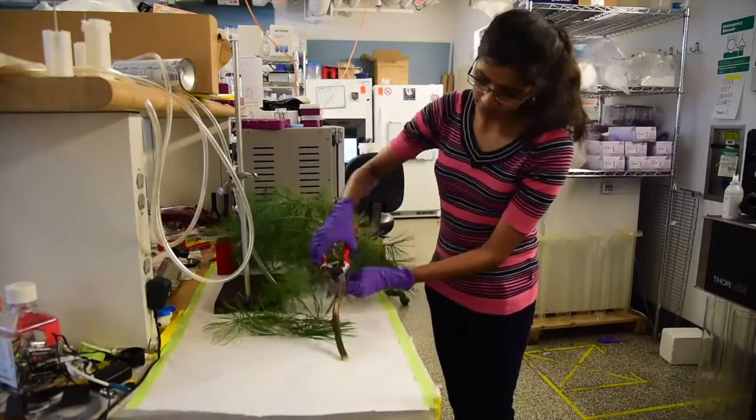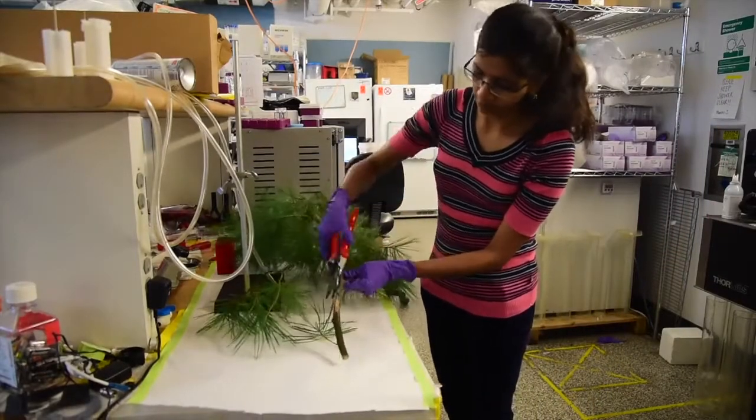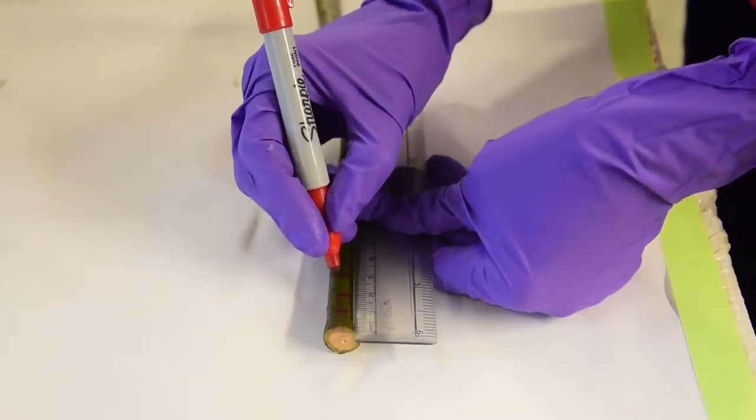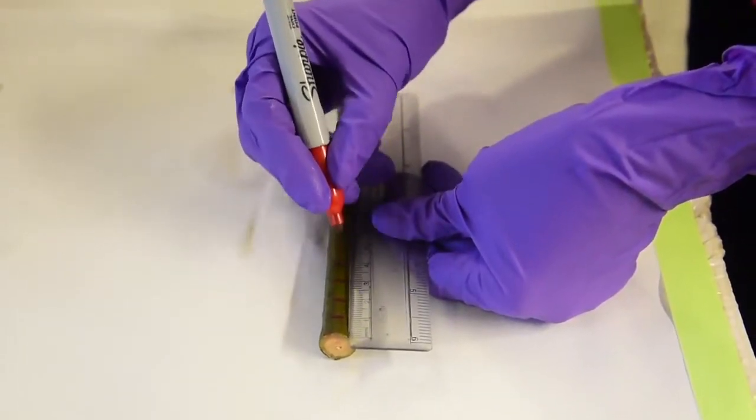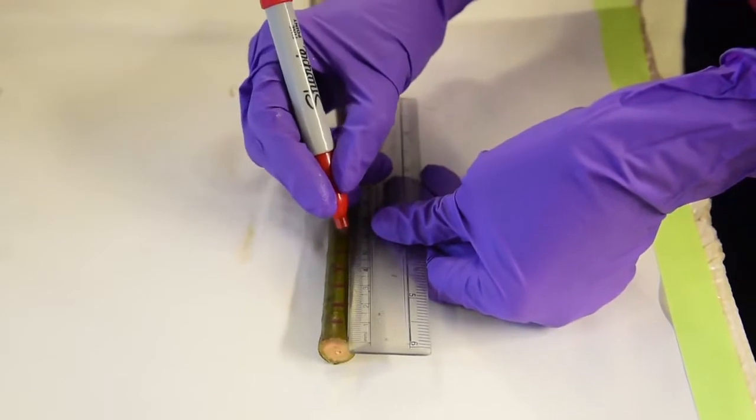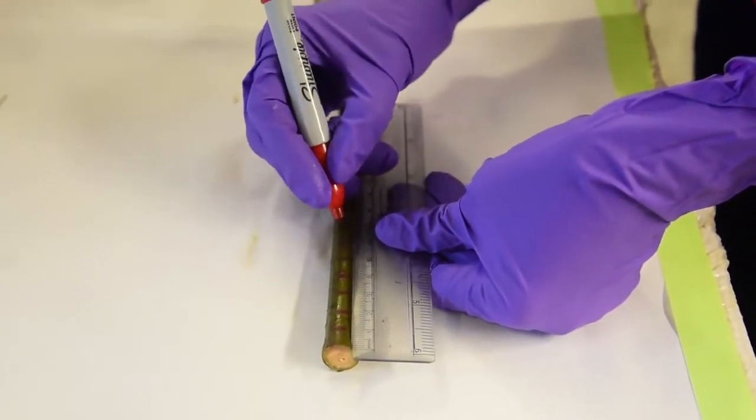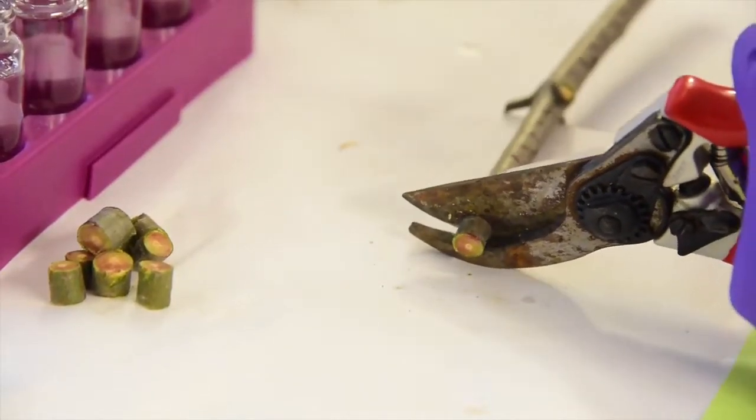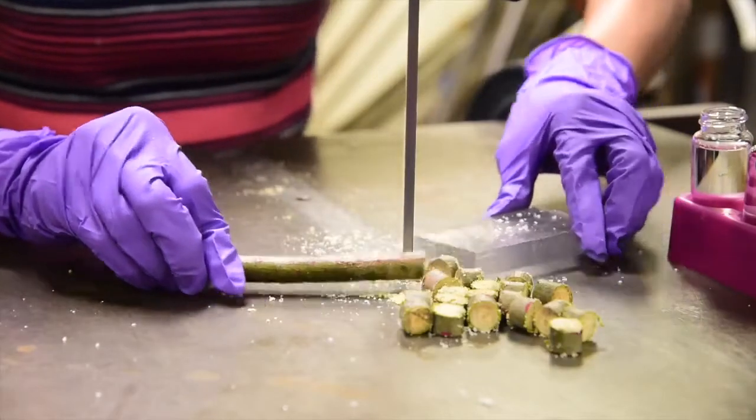We only need a small section of the branch to create a filter. Draw 1 cm markings on the branch using a sharpie and cut the branch into smaller sections. The cutting can be done using a pruner or a vertical bandsaw.